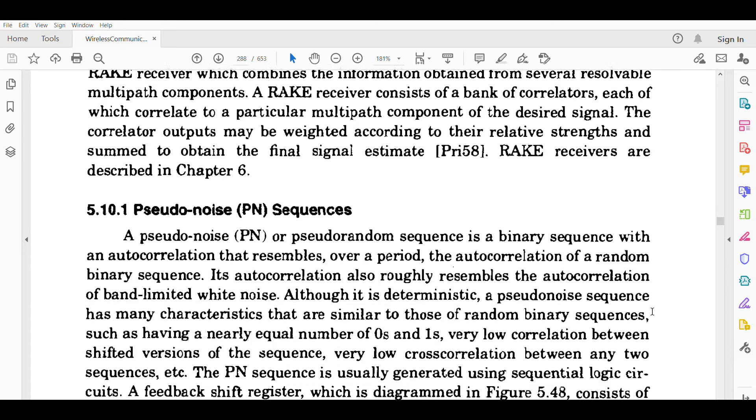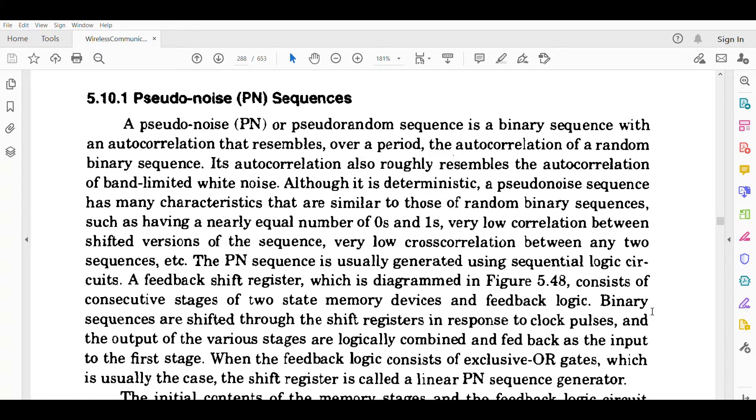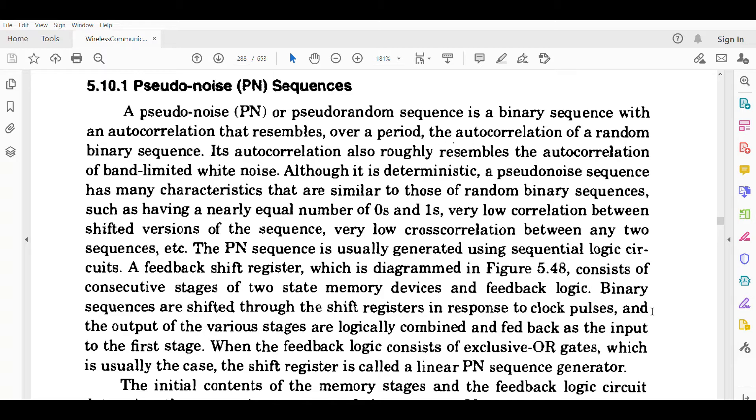Let us learn about PN sequence - what is pseudonoise sequence? A pseudonoise random sequence is a binary sequence which has an autocorrelation that resembles, over a period, the autocorrelation of a random binary sequence. Its autocorrelation also roughly resembles the autocorrelation of bandlimited white noise. Although it is deterministic, a pseudonoise sequence has many characteristics that are similar to those of random binary sequences, such as having a nearly equal number of zeros and ones, very low correlation between shifted versions of the sequence, very low cross-correlation between any two sequences, etc.